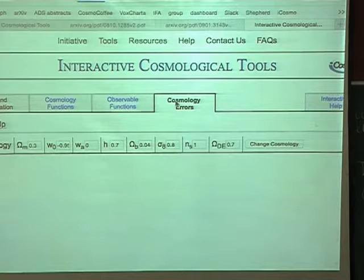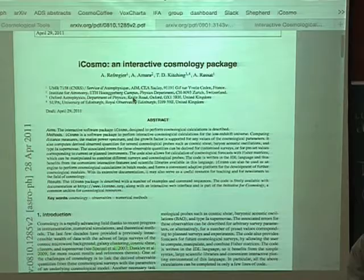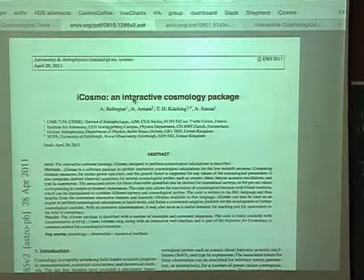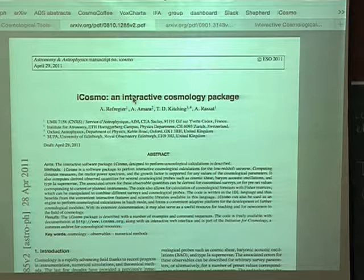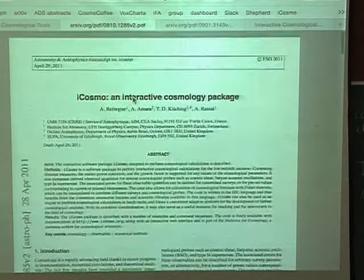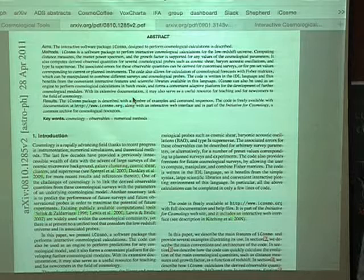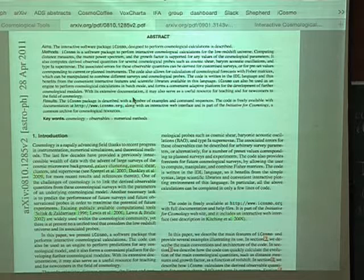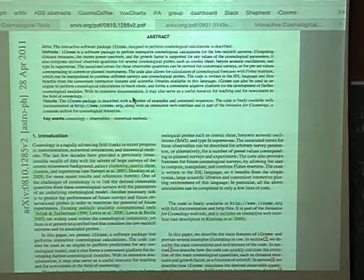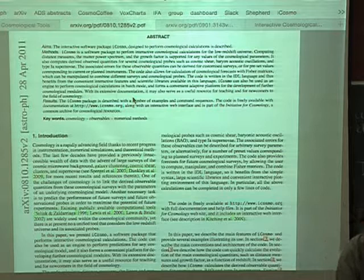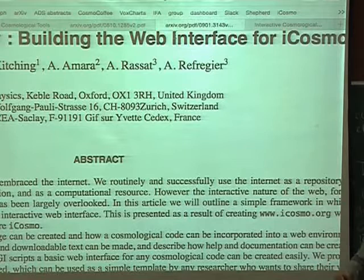In this particular case, the code is described in this paper that we wrote. But there's also a lot of online documentation. You can look at this paper. Maybe I'll write the Astro PH number. You're familiar with Astro PH, which is a server for preprints. It's also available in the journal Astronomy and Astrophysics. If you Google archive and type the number 0810.1285, you can see the paper. There's also another paper that describes the web interface. You can find it on the web page also.